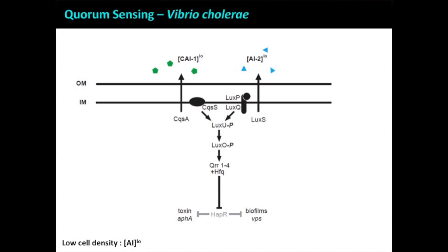The idea here is that you can turn off a repressor — you can remove the brake and a gene comes on. In this case, the small RNAs result in production of biofilms and virulence factors via shutting off a repressor.